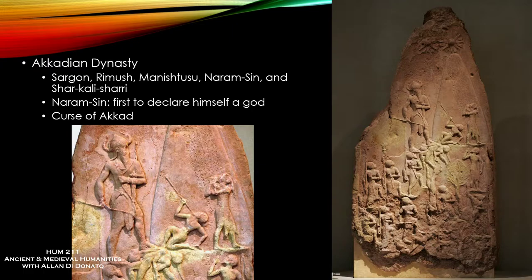Sargon left a dynasty that goes for a couple of generations. Among his successors, the most important is probably his grandson Naram-Sin. In the picture you see the Stele of Naram-Sin — he was one of the kings who definitely saw himself as more than mortal, declaring himself a god on earth. This idea of the divine king is going to be very common for Egypt — it's the rule, not the exception there. The dynasty supposedly fell because of a curse laid on the family due to sacrilege committed by Naram-Sin, recorded in a poem called The Curse of Akkad.